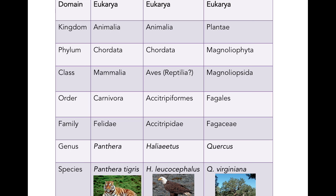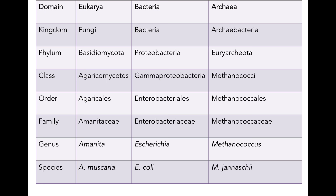But it's not just common things like tigers, eagles, and trees that we can apply these taxonomic levels to. There are also fungi, bacteria, and archaea. We've got species names like Amanita muscaria, Escherichia coli, and Methanococcus jannaschii.